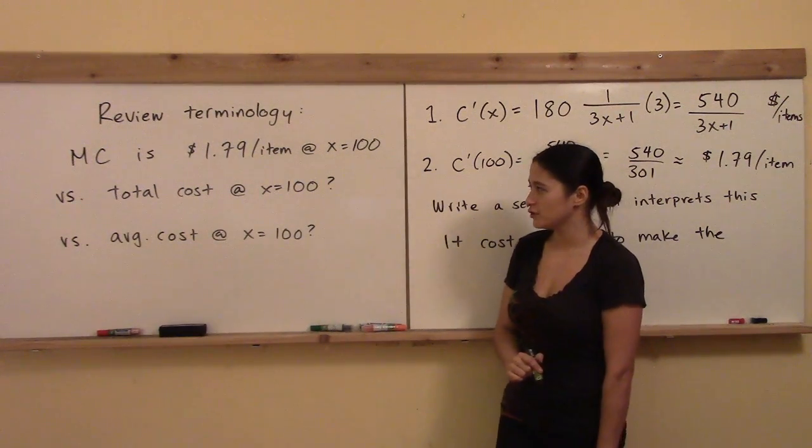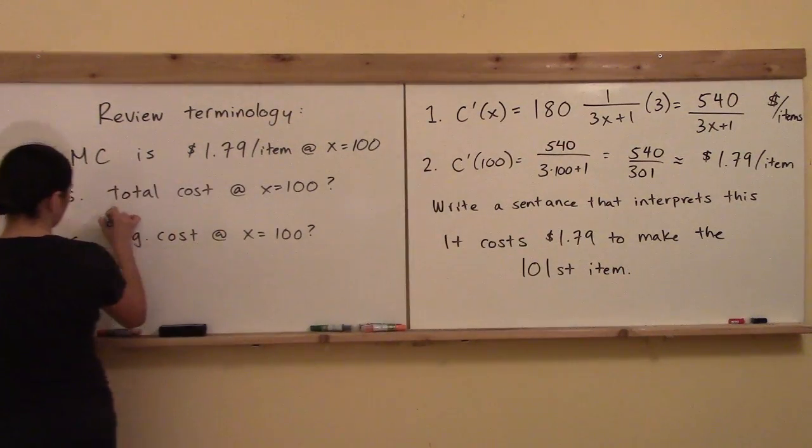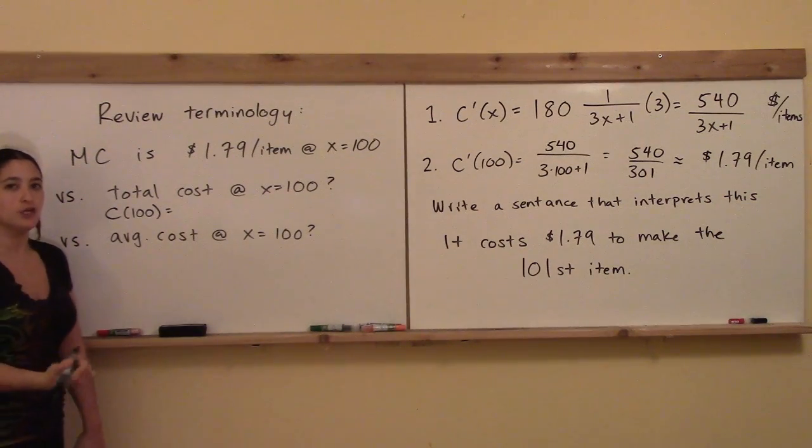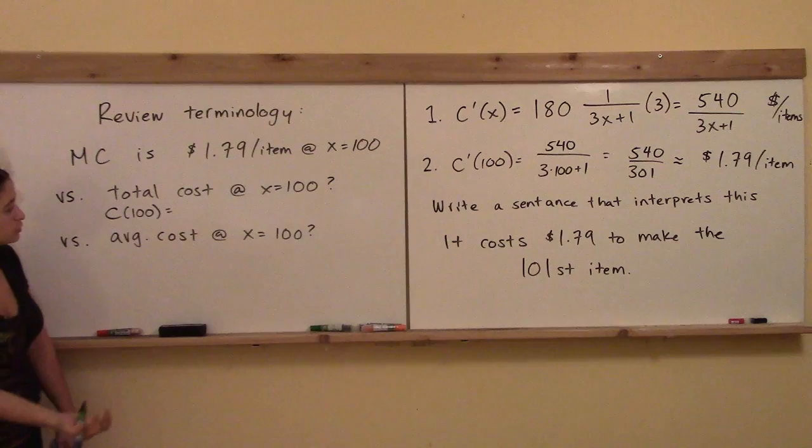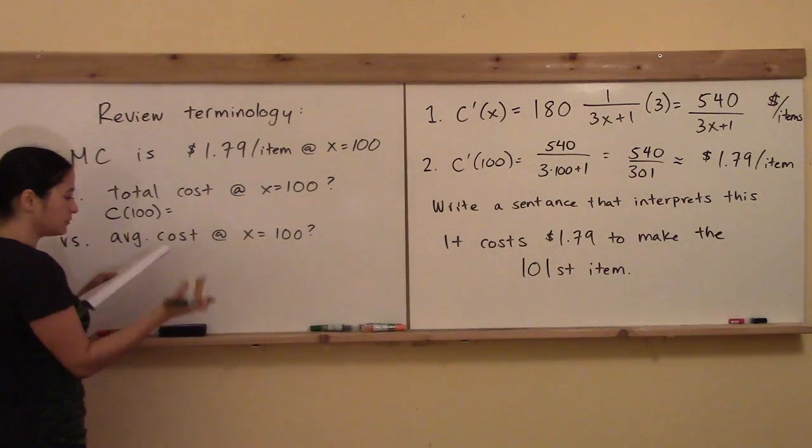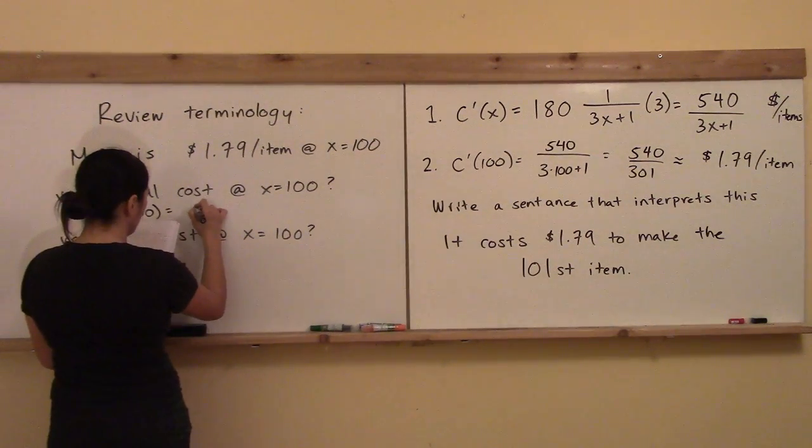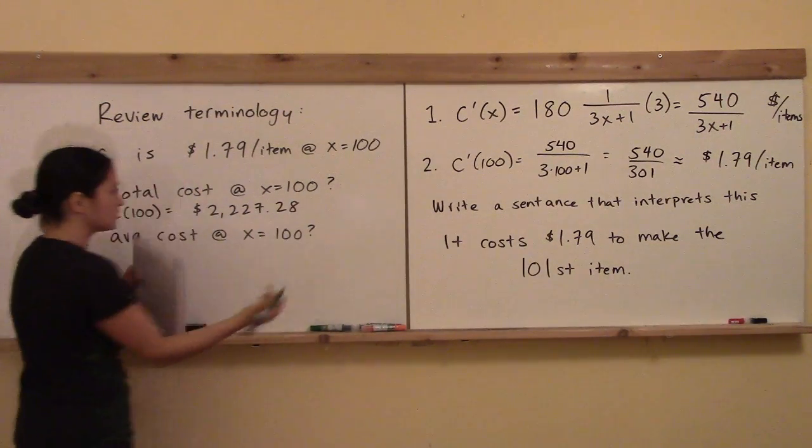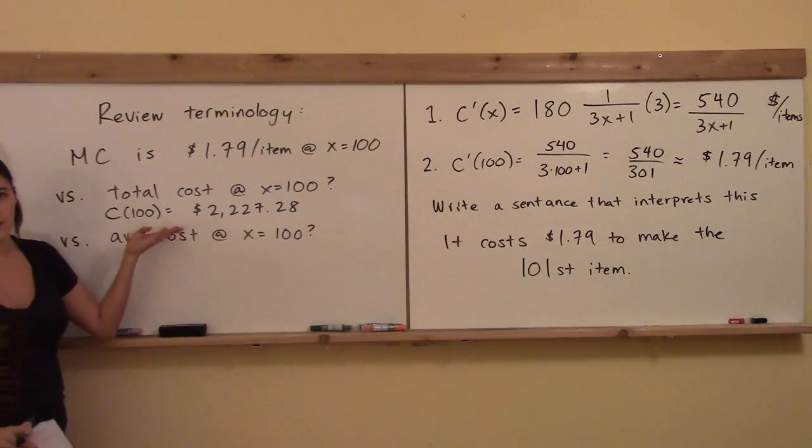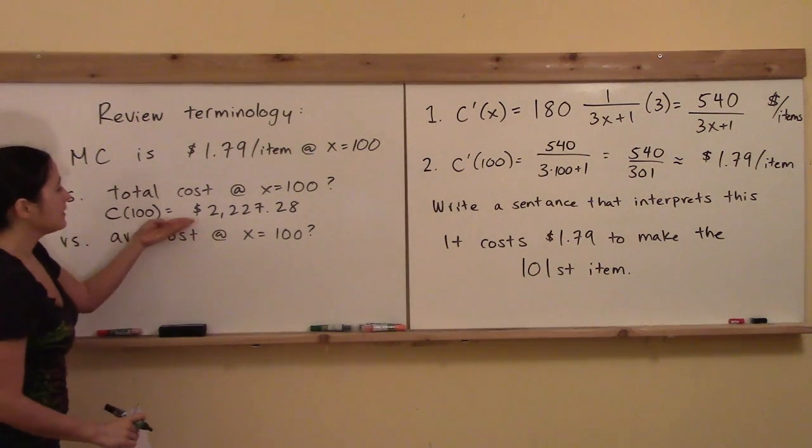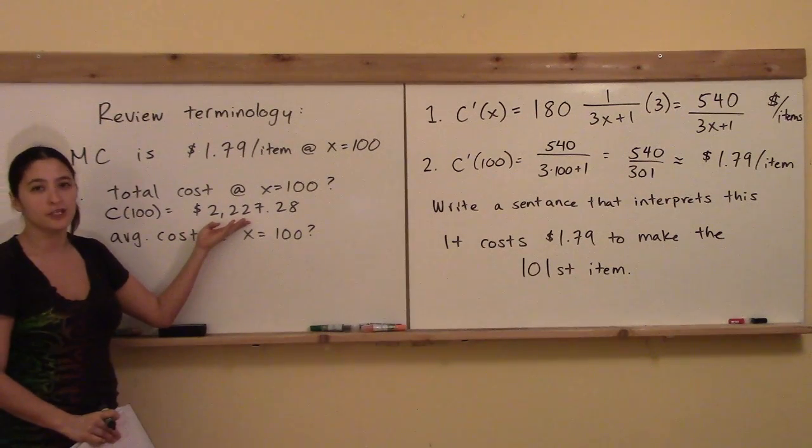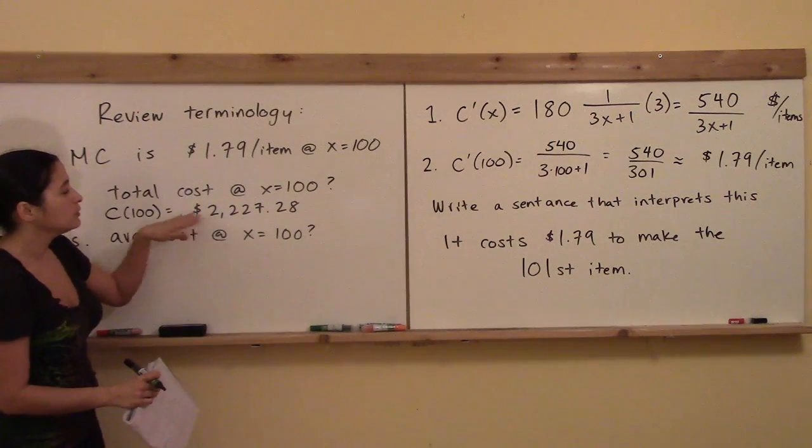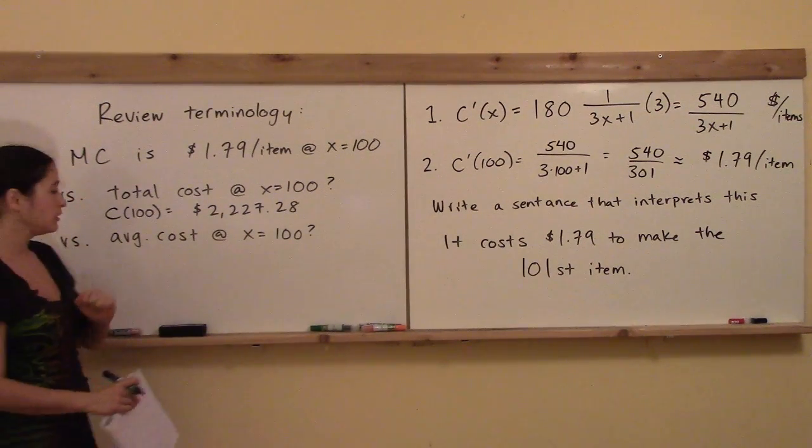We've already answered marginal cost, but go ahead and just for a little sake of review, try to answer these. What is the total cost at x equals 100 items? What is the average cost at x equals 100 items? So I hope you tried to review those to make sure that you know you've continued to know the answer. This answer is going to be by just plugging in x equals 100 to the original cost function, the original total cost function. And if you plug in x equals 100 there, you're going to get $2,227.28. And if you want to write a sentence to interpret this, the sentence would say, this is how much it cost me to make my first 100 items in total. To make all 100 items is costing me $2,227.28.